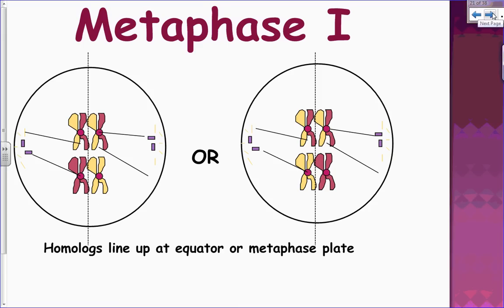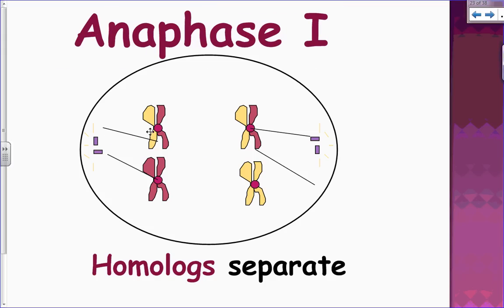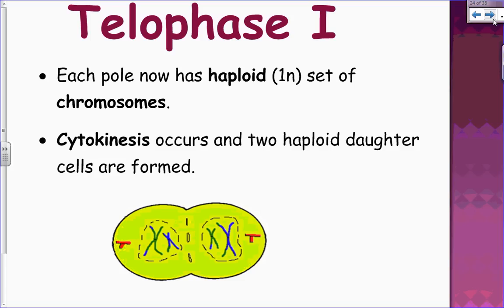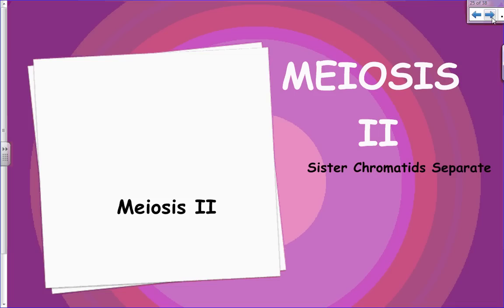During anaphase one, the homologous chromosomes separate and move toward the poles — sister chromatids remain attached. In telophase one, we now have two cells with a haploid number of chromosomes. Cytokinesis occurs and two haploid daughter cells are formed. That completes meiosis one.